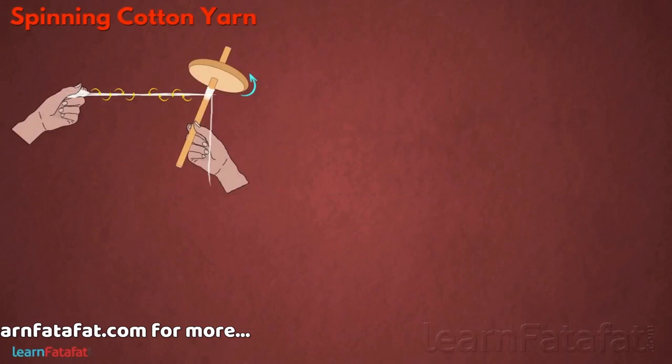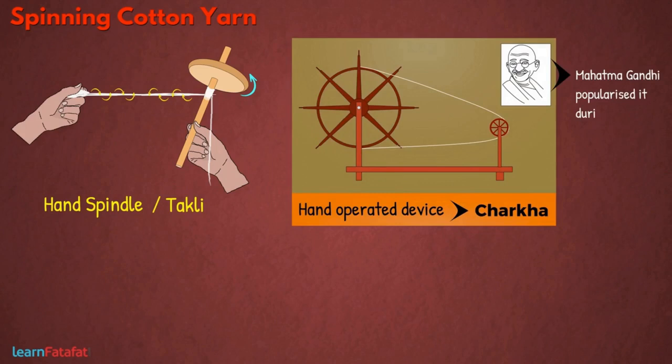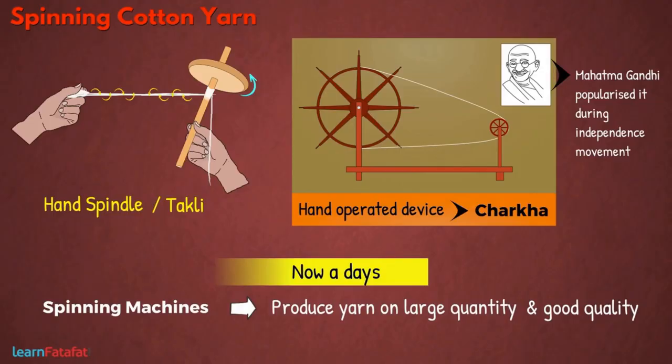A simple device used for making yarn is the hand spindle, also called dakli. A famous hand-operated device is the charkha, which Mahatma Gandhi popularized during the independence movement. Nowadays, spinning machines are used to produce yarn in large quantities and with good quality.